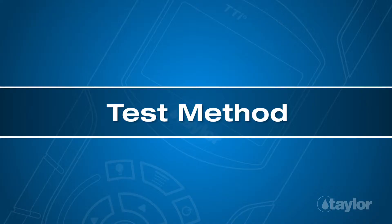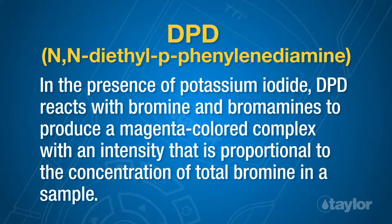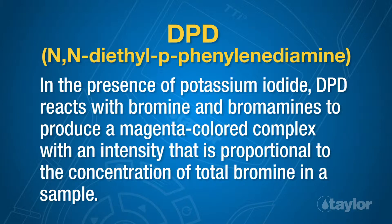Test Method: DPD. In the presence of potassium iodide, DPD reacts with bromine and bromamines to produce a magenta-colored complex with an intensity that is proportional to the concentration of total bromine in a sample.